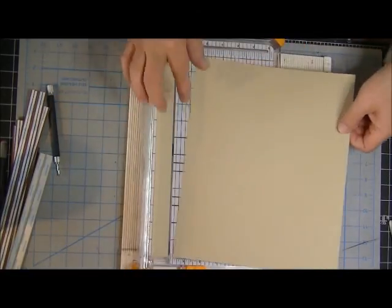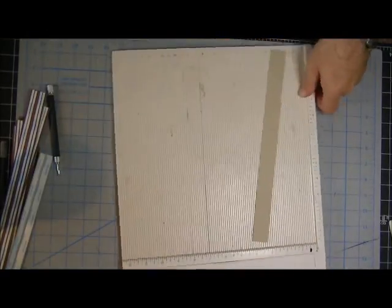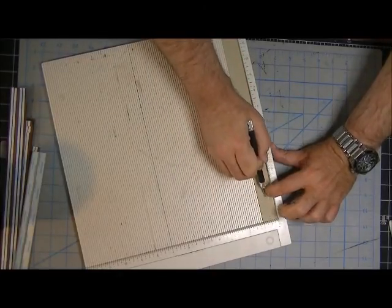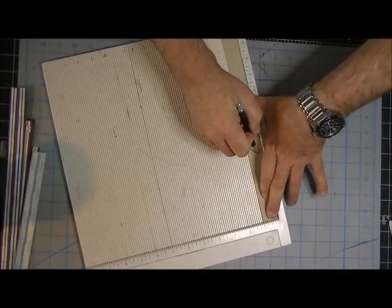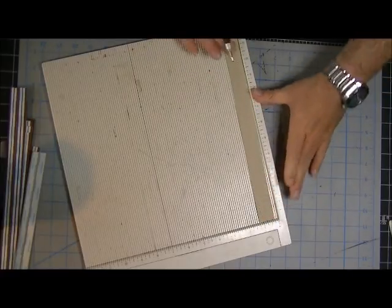I cut it at one inch, I bring it over to the scoreboard, and I score it at half inch. I bring it over and hold it with my hands all the way down, because it will move.